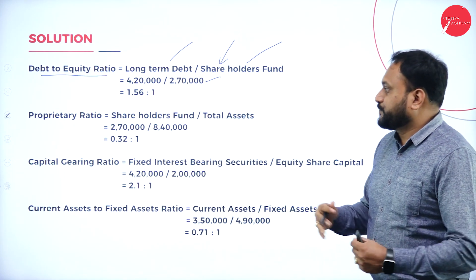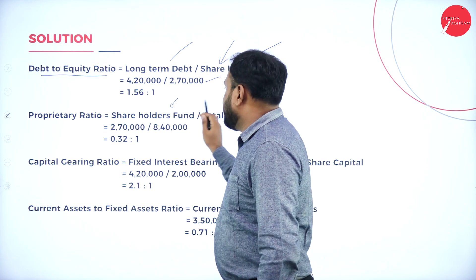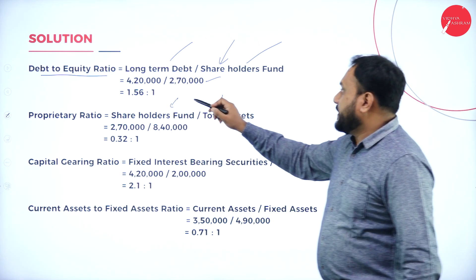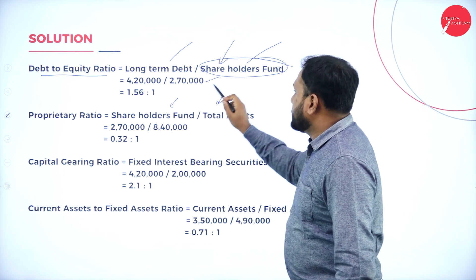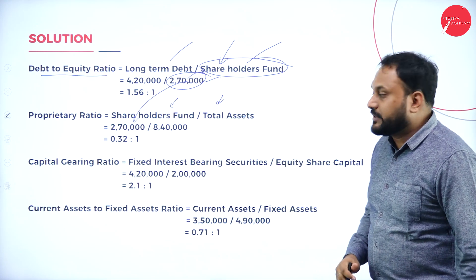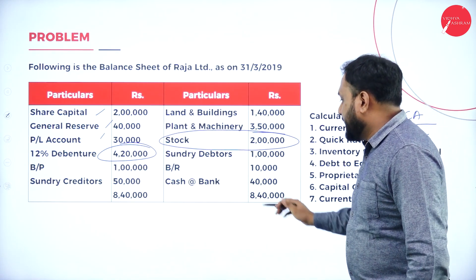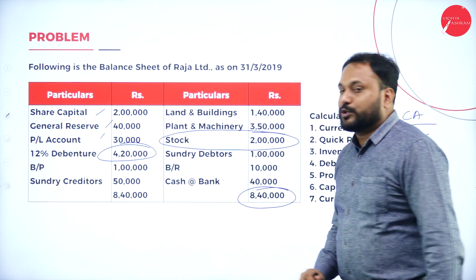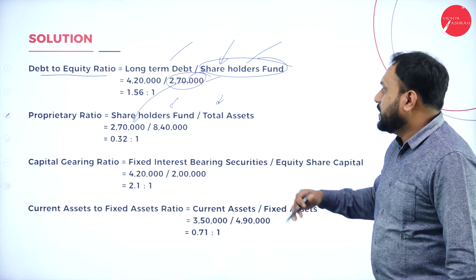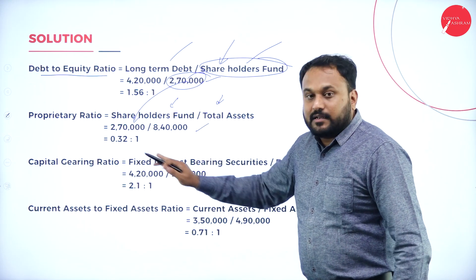Proprietor ratio is Shareholders' Fund divided by Total Assets. Shareholders' Fund is 2,70,000 as computed. Total Assets are read directly from the asset side of the balance sheet — here it is 8,40,000. So Proprietor ratio is 2,70,000 divided by 8,40,000.